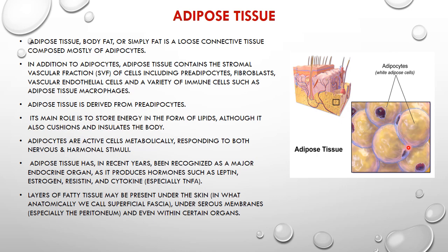Adipose tissue is composed of fat cells or adipocytes. These adipocytes or fat cells are present singly or in groups in the loose areolar tissue, but when they exceed in number they form the hypodermis layer of the skin, which is below the dermis layer. In addition to the adipocytes, adipose tissue also contains stromal fractions of pre-adipocytes, fibroblasts, vascular endothelial cells, and a variety of immune cells such as adipose tissue macrophages.